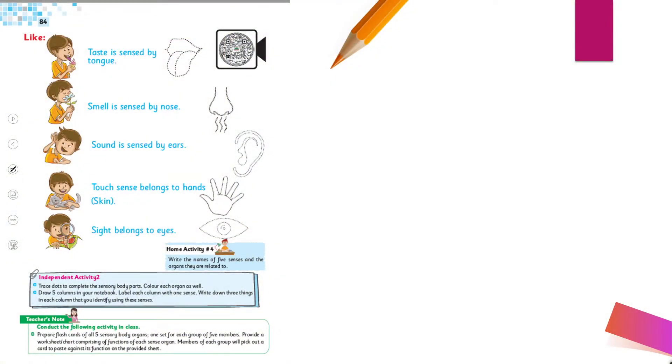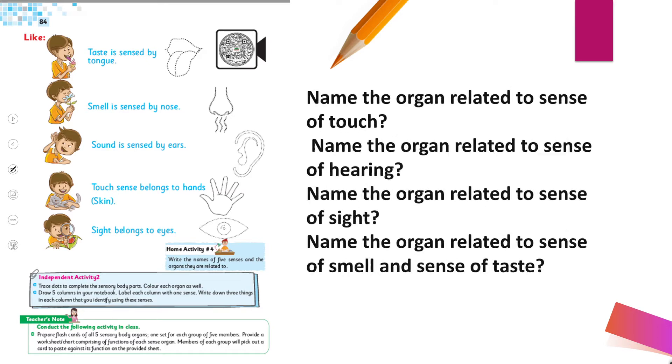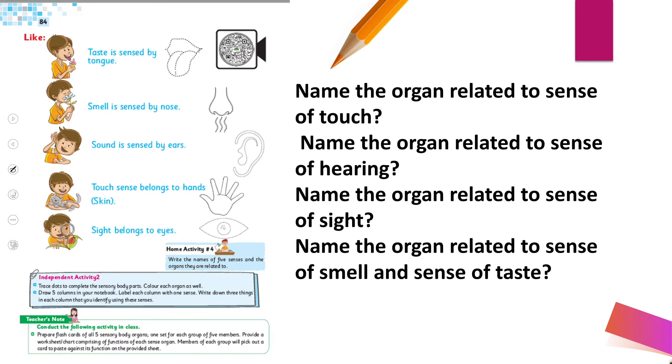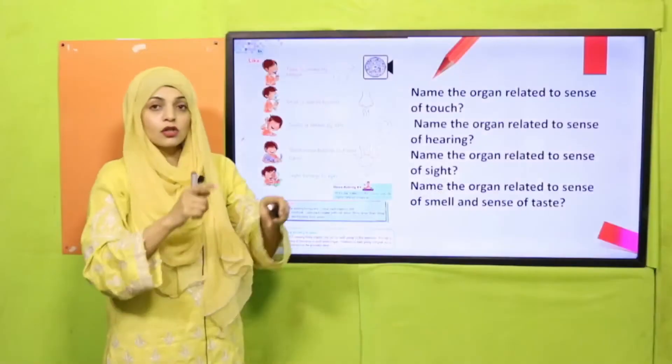We have covered all five senses. Now quickly tell me: name the organ related to the sense of touch — it is the skin. Name the organ related to the sense of hearing.